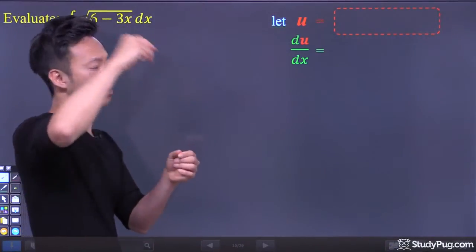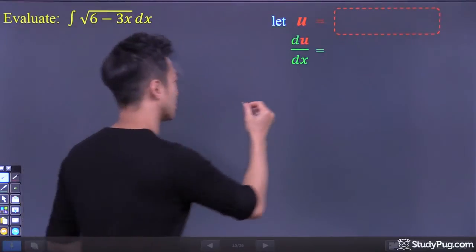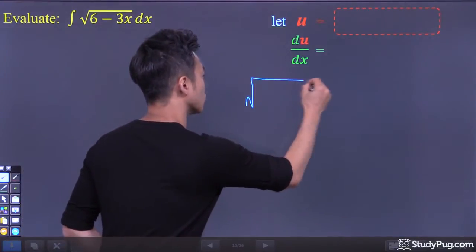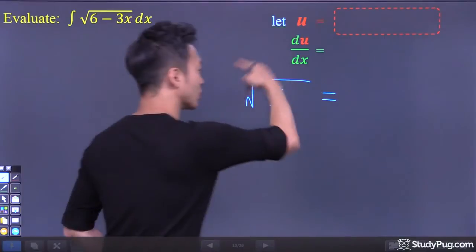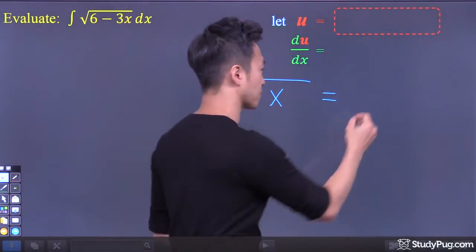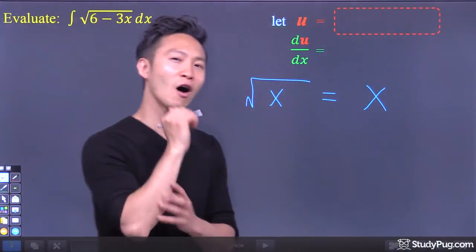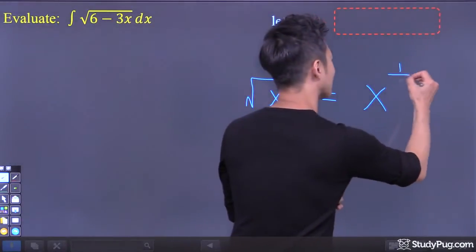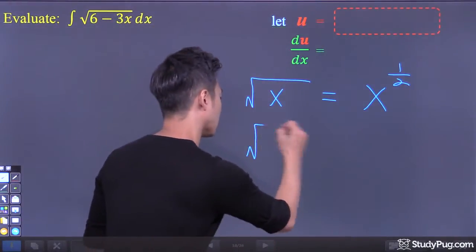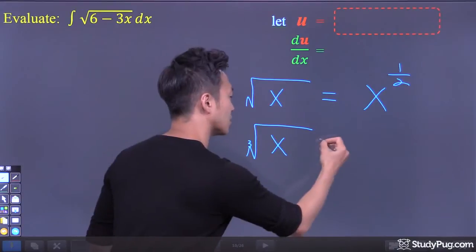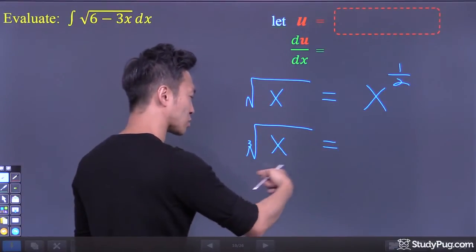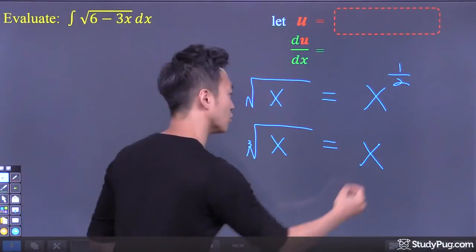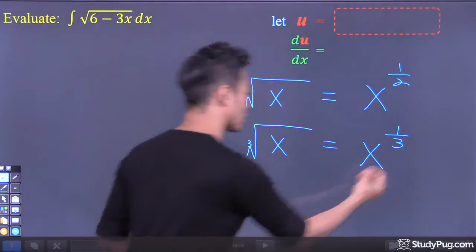A quick review from our previous algebra course. For a radical expression, the square root of x, we can express this as x to the power of 1 over 2. How about cubic root? For a cubic root of x, we can express this radical expression as x to the power of 1 over 3.